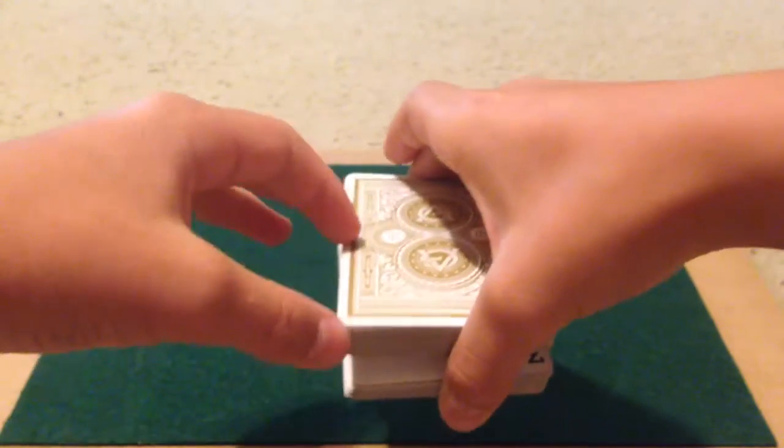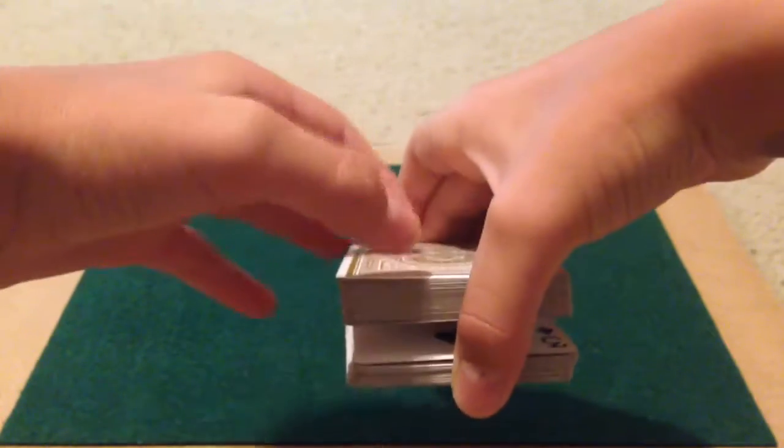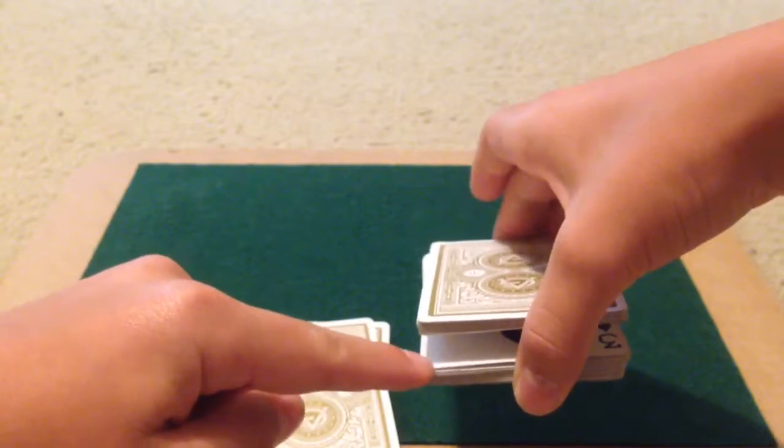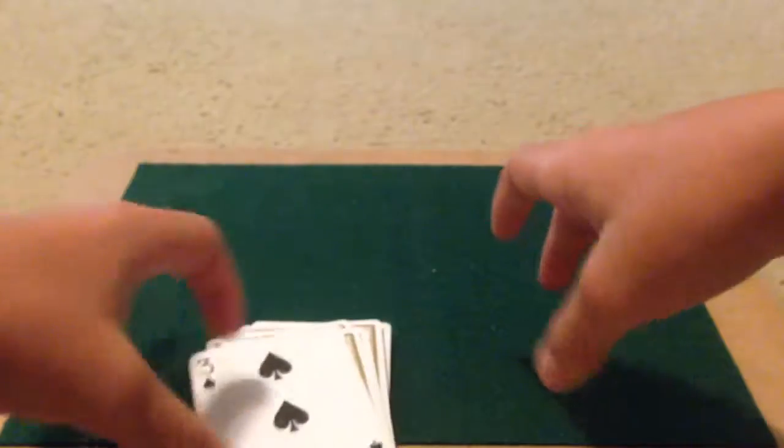And then what you're going to do is take packets using this hand off the top section here, just like that. And place it onto the table, because their card is right here. Just keep doing that until you reach the break where their card is and place the rest on top.